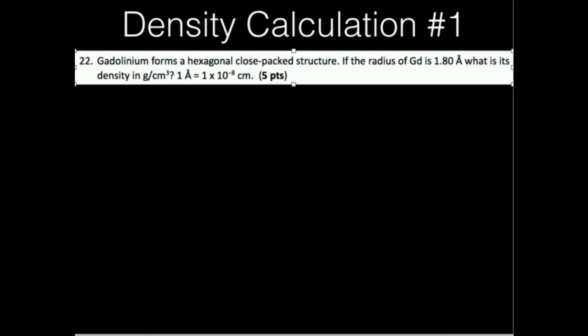We know that the radius is 1.80 angstroms and it's hexagonal close-packed. What's its density?